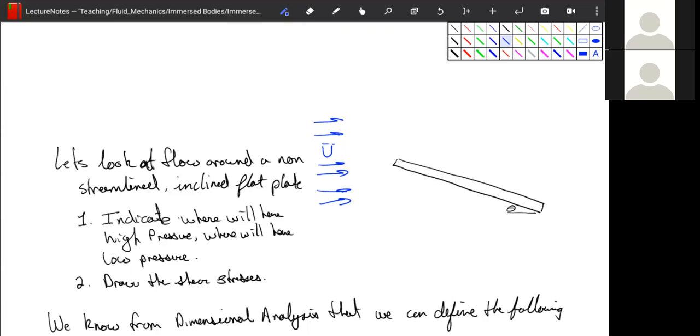So hopefully you paused it, and we're just going to start drawing now. We're going to have low pressure on the back side. We're going to have high pressure on the bottom side, and our shear stress is going to be along our object like this, generally speaking.